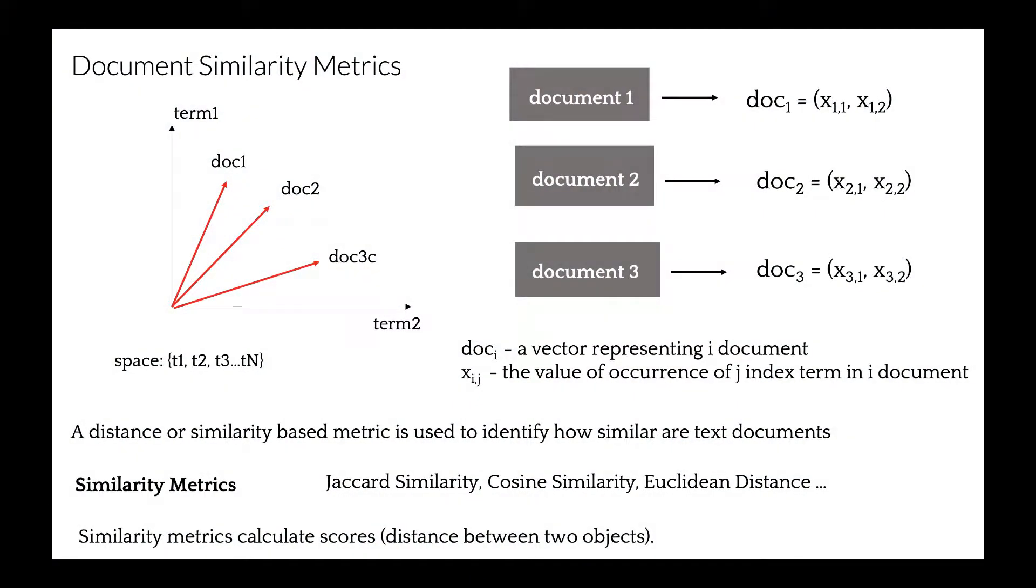Each document is represented as a vector of terms in a vector space, in which there is one axis for each term. The space can contain terms from term 1 to term n.